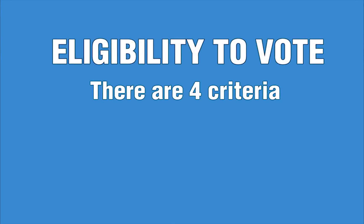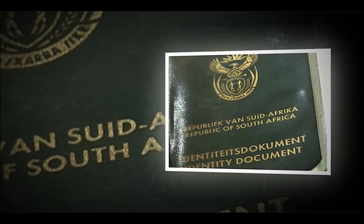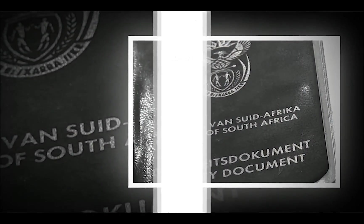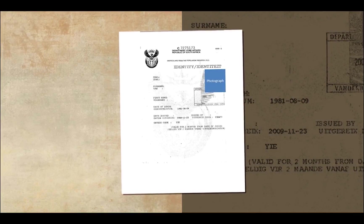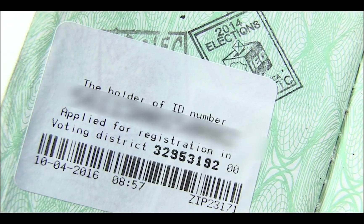There are four criteria which allow a person to vote. They have to be a South African citizen. They must be 18 years or older. They must be in possession of a green barcoded South African ID document, a valid temporary identification certificate, or smart card ID.